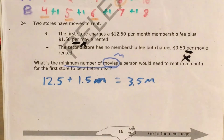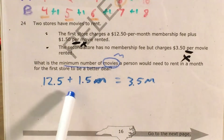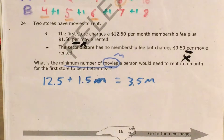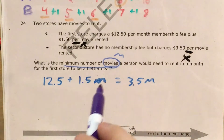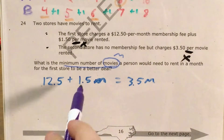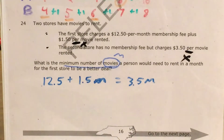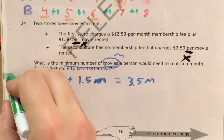Even though we're trying to figure out the minimum number of movies a person would need to rent for the first store to be a better deal, I'm going to set this up like an equation, but we will have to come back to this wording. The first time I looked at this question, I almost tripped myself up because I didn't read it carefully. So let's solve this equation — we have a variable on both sides, so I'll use the trick I love to use: VULNOR.